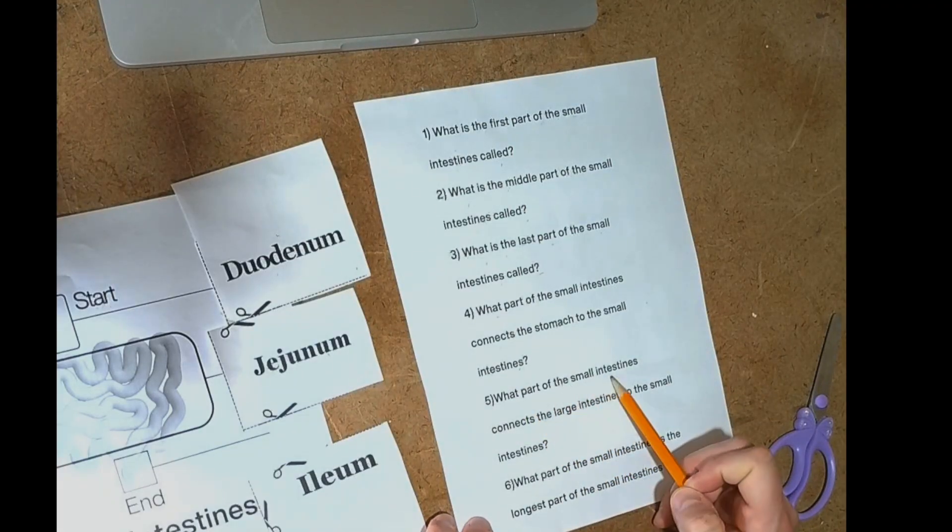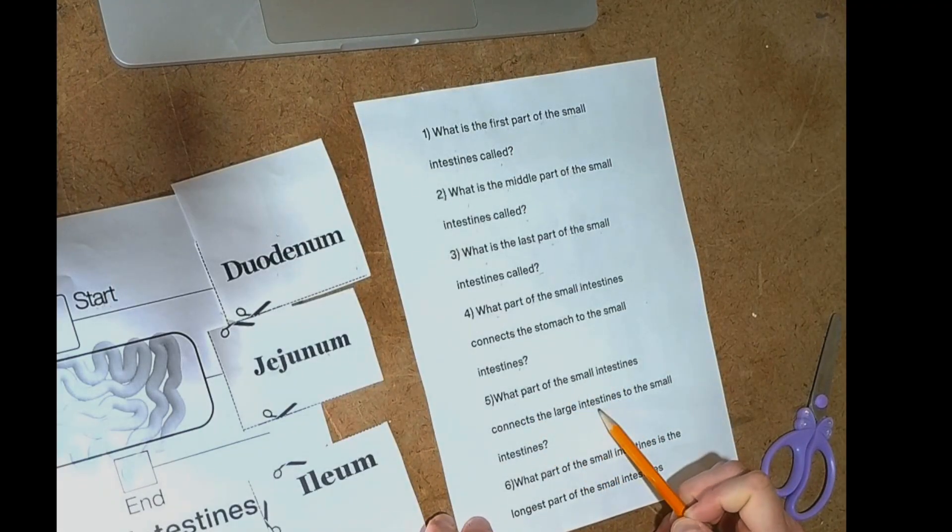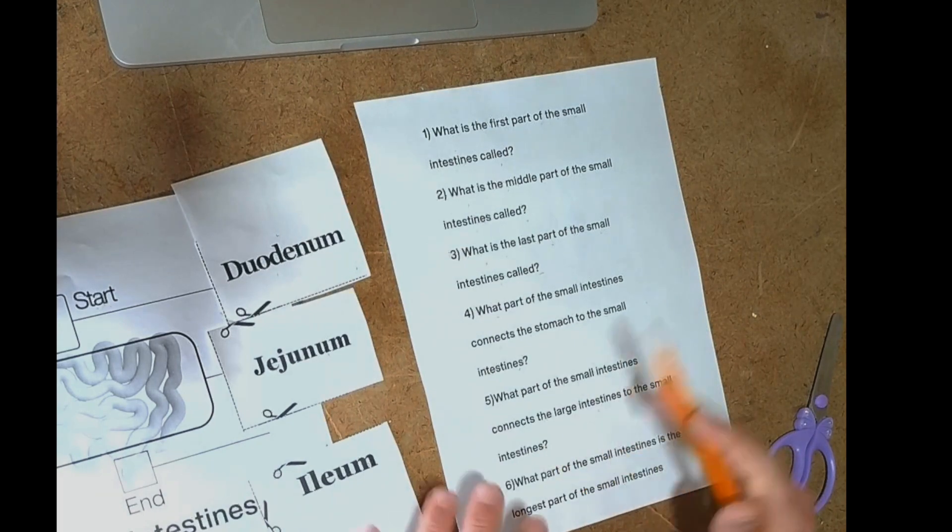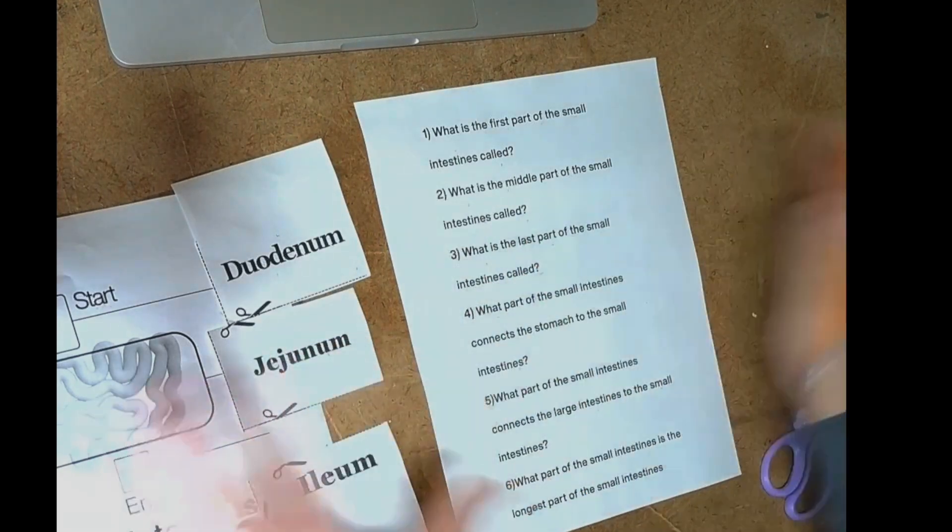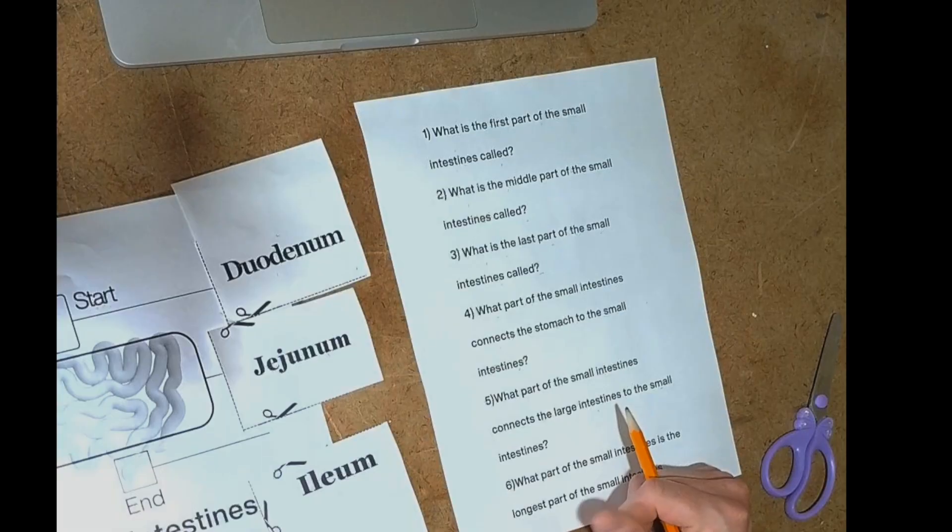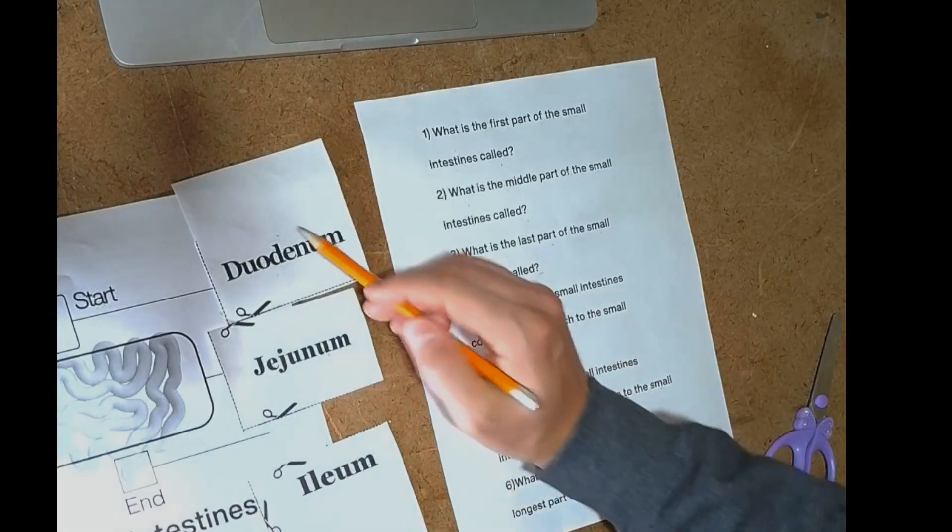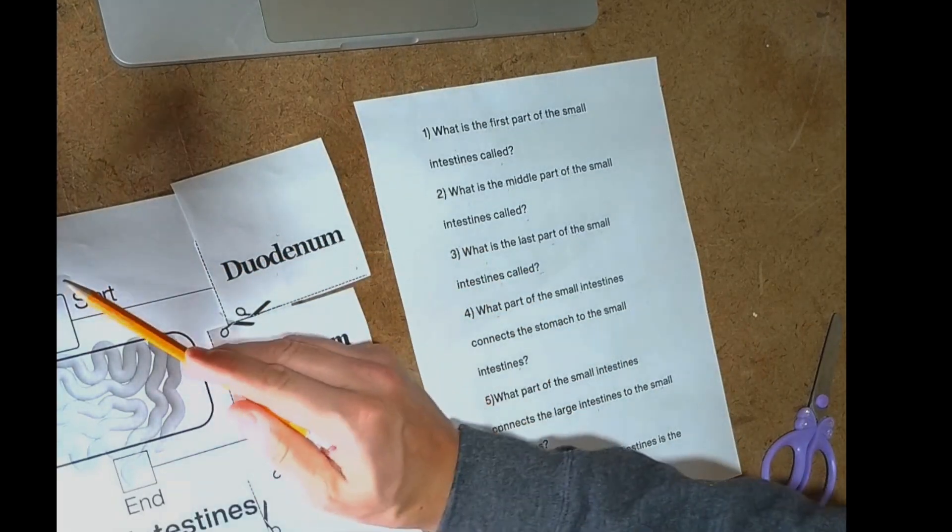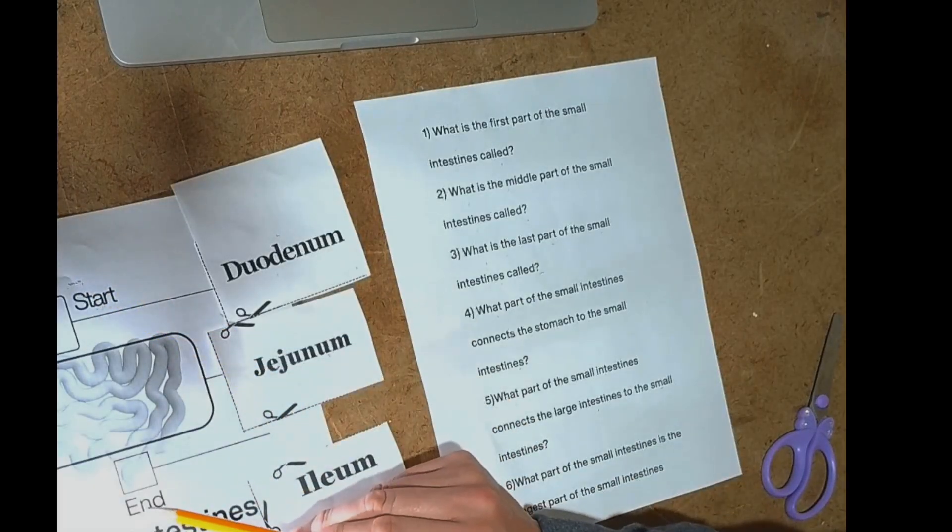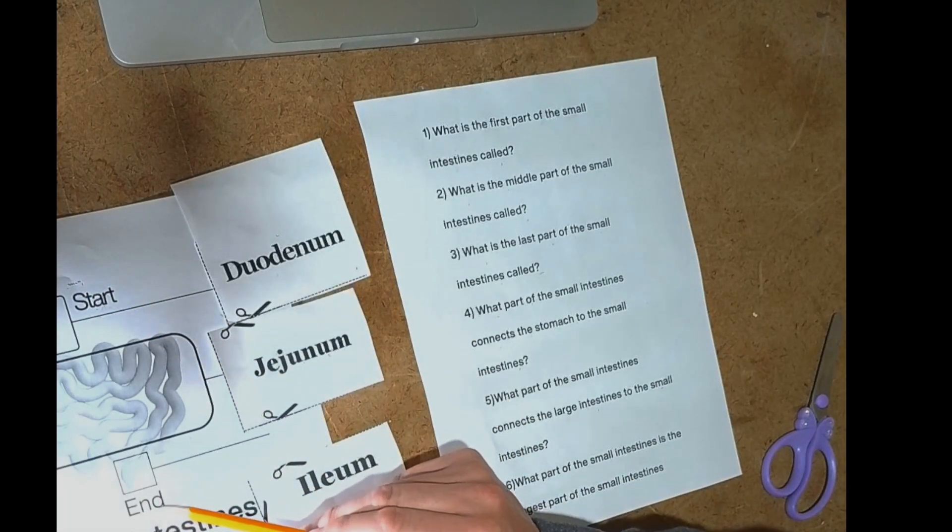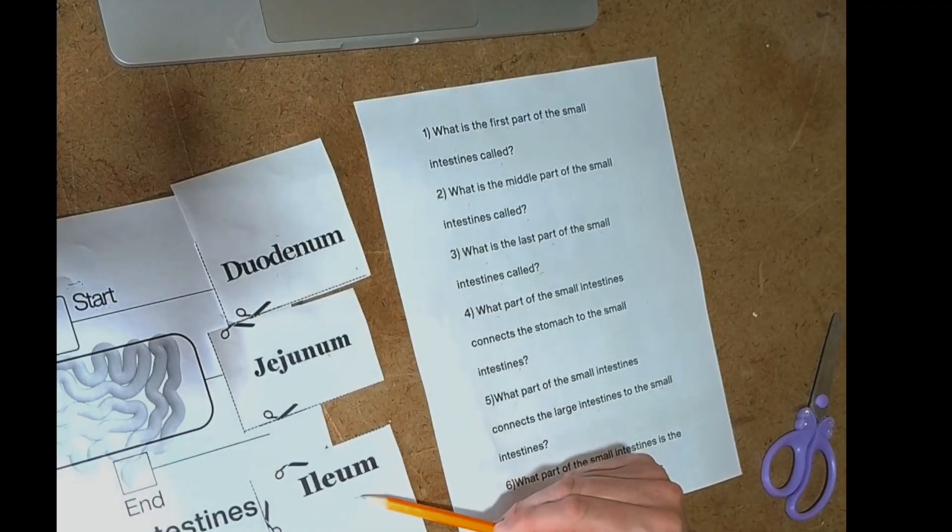What part of the small intestines connects the large intestines to the small intestines? The large intestines is after the small intestines. So we need to look at our diagram again. If the stomach started it and the large intestines finish it, it's going to be the ileum.